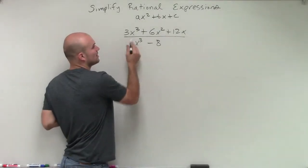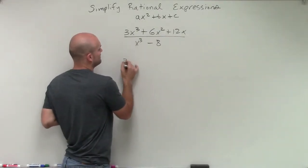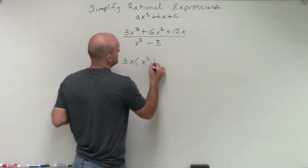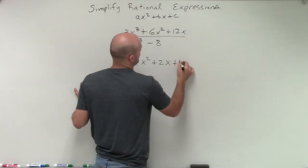Now I can factor not just an x, but also a 3. So when I factor out a 3x, I'm now going to be left with an x squared plus 2x plus 4.